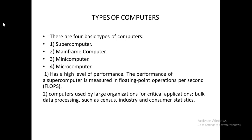The four basic types are: number one, the supercomputer; number two, the mainframe computer; number three, the mini computer; and finally, the microcomputer. A supercomputer has a very high level of performance — it is very fast and a very big and powerful computer. The mainframe computer is also a very large computer, used by very large organizations for critical applications and bioprocessing.